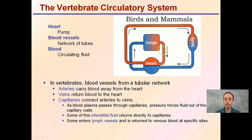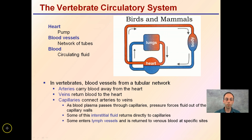Some lymph cells are returned to the venous blood at specific sites, giving a distinction between the lymph system and the circulatory system, even though both work in coordination with one another. Hopefully this gives you a sense of the timeline and the different complexities related to circulatory systems.